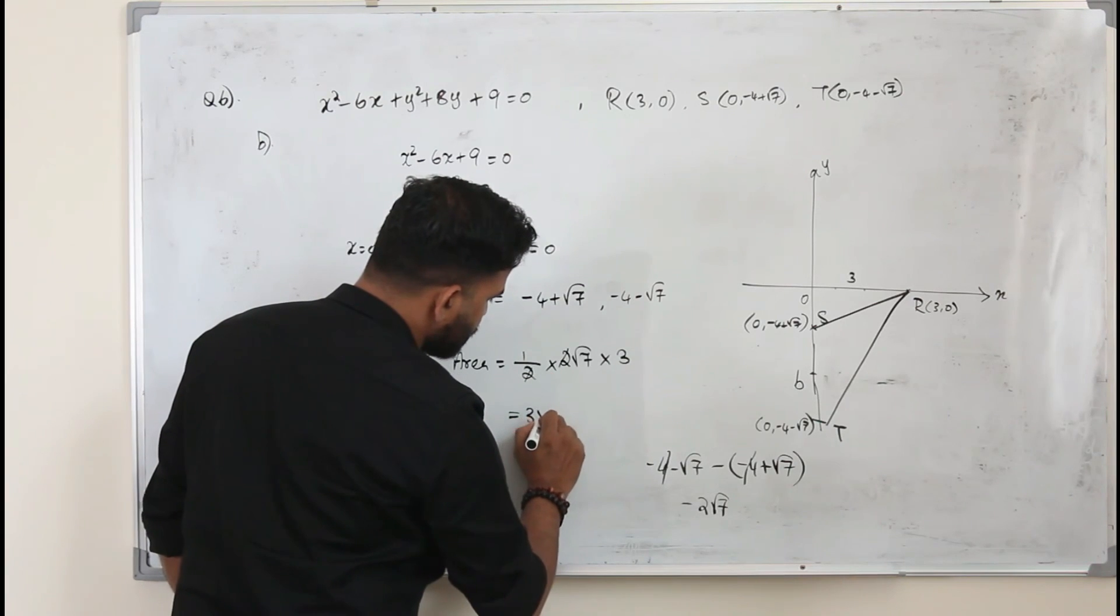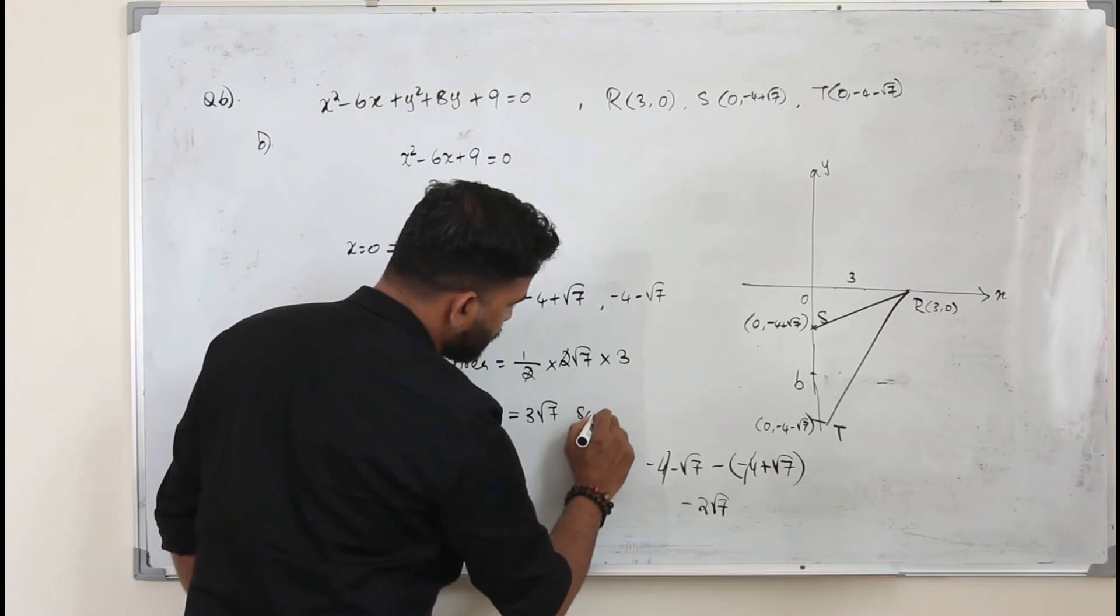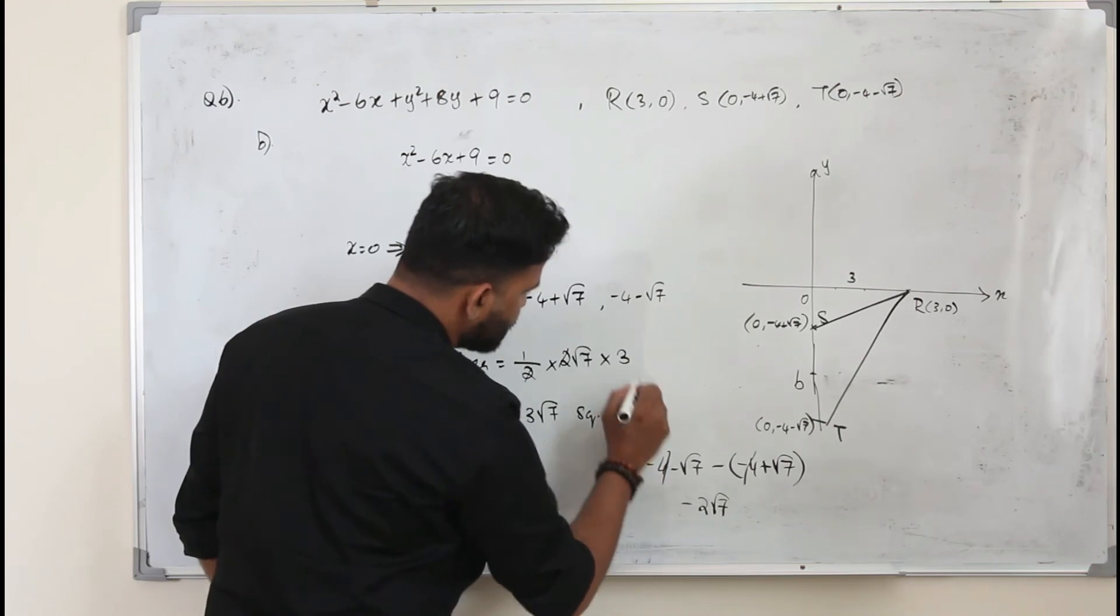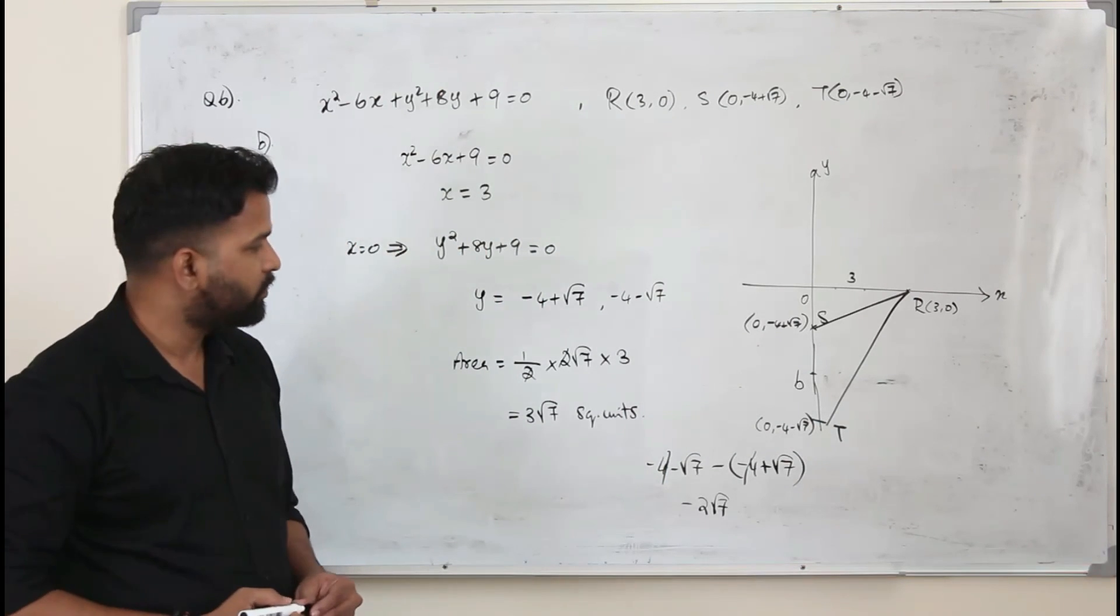So the area is 3 square root of 7 square units. That's the area of the triangle.